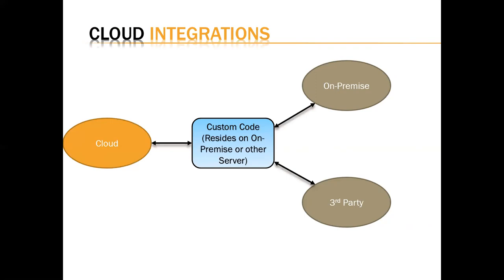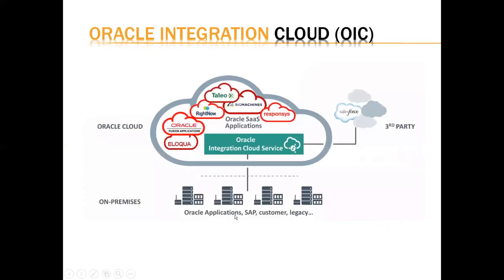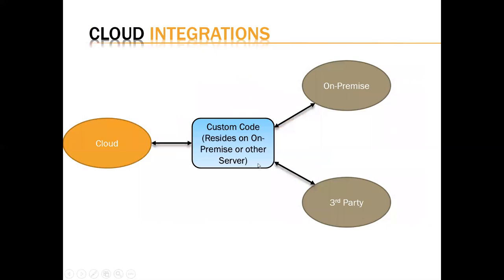Most things can be done with custom code, but that makes maintenance very heavy. The third-party can be another SaaS application like Salesforce, Microsoft Active Directory, a banking system, a warehouse, or any on-premise system. For a large organization with hundreds of processes, maintaining custom code on a server would be very difficult. For that reason, Oracle came up with a tool called Oracle Integration Cloud — OIC.